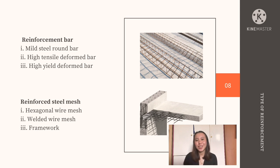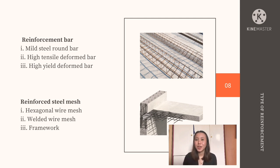Before I end my presentation, it would not be complete without knowing the types of reinforcement. There are mainly two types. Type A is reinforcement bar, which consists of mild steel round bar, high tensile deformed bar, and high yield deformed bar.